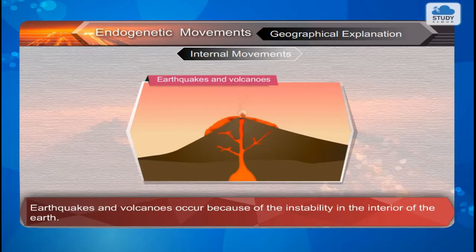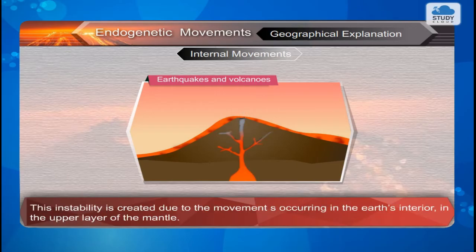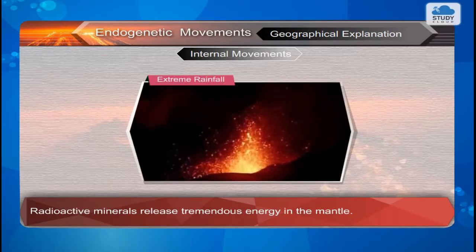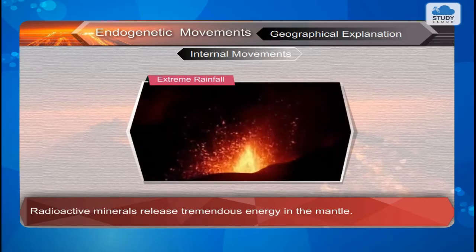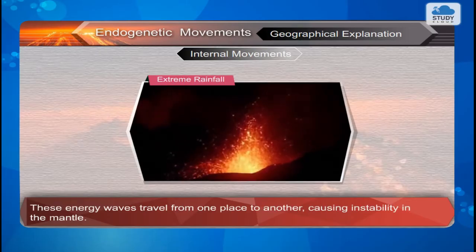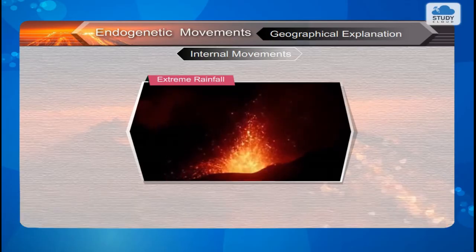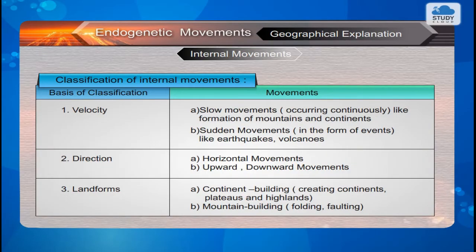Geographical explanation — Internal movements: Earthquakes and volcanoes occur because of the instability in the interior of the earth. This instability is created due to movements occurring in the earth's interior, in the upper layer of the mantle. Radioactive minerals release tremendous energy in the mantle. These energy waves travel from one place to another, causing instability in the mantle. The movements are classified on the basis of their velocity, direction, and the landforms they produce, as shown in this table.